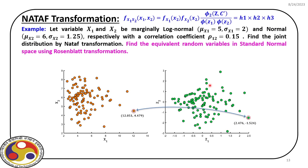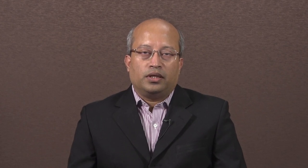Today we covered the last mathematical model — Rosenblatt transformation — which converts X space directly into Z space. In the Z space, the reliability index is defined as per Hasofer and Lind, allowing us to estimate design points using the Jacobian. This concludes our discussion on iso-probabilistic transformation. In our next module we will discuss the second order reliability method. Thank you very much.